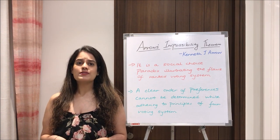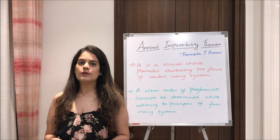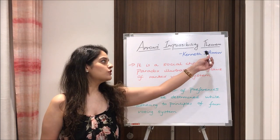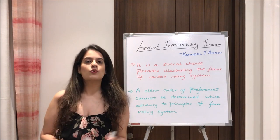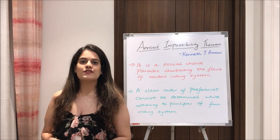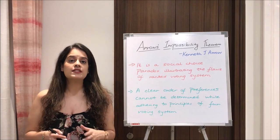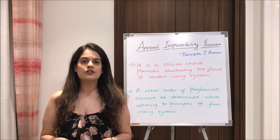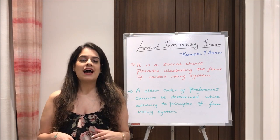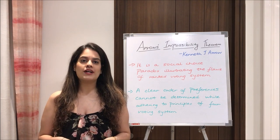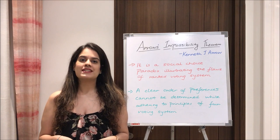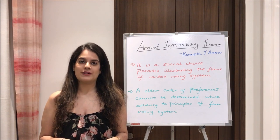Arrow's impossibility theorem was formulated by Kenneth J. Arrow, who was a Nobel Prize winner. He first demonstrated this theorem in his doctoral thesis and later popularized it in his book Social Choice and Individual Values.